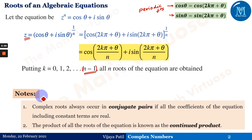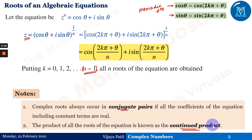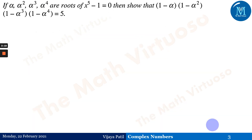There are a few important notes. First: complex roots always occur in conjugate pairs if all coefficients of the equation including constant terms are real. Second: the product of all roots of the equation is known as the continued product. This type of question will also be asked and we will be discussing it.